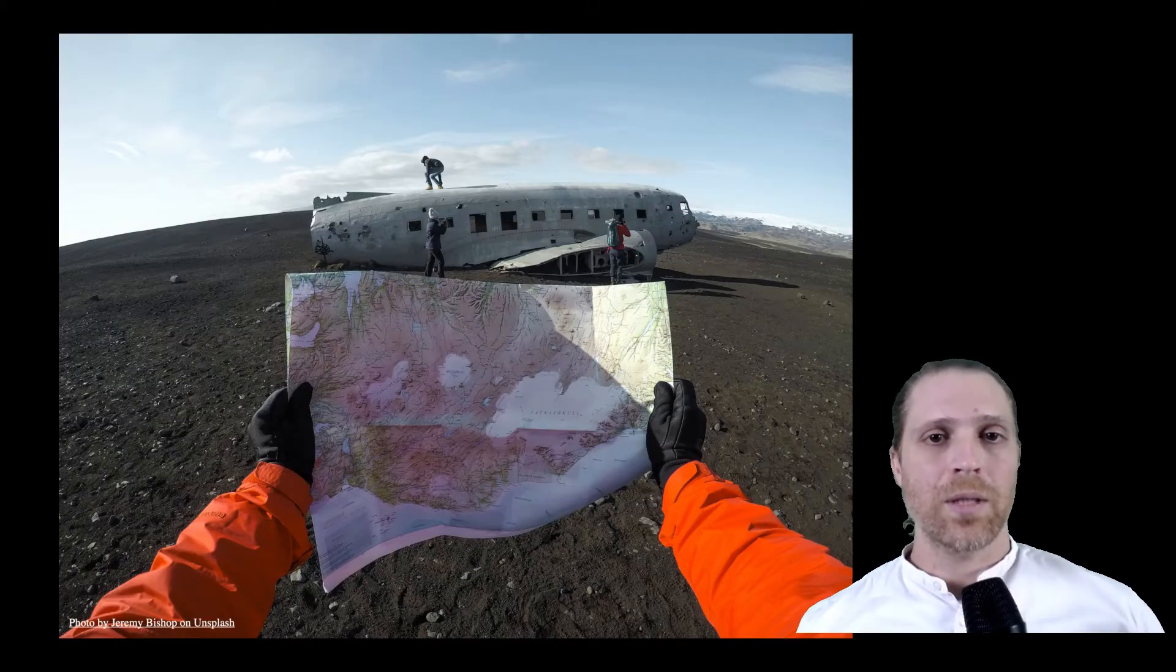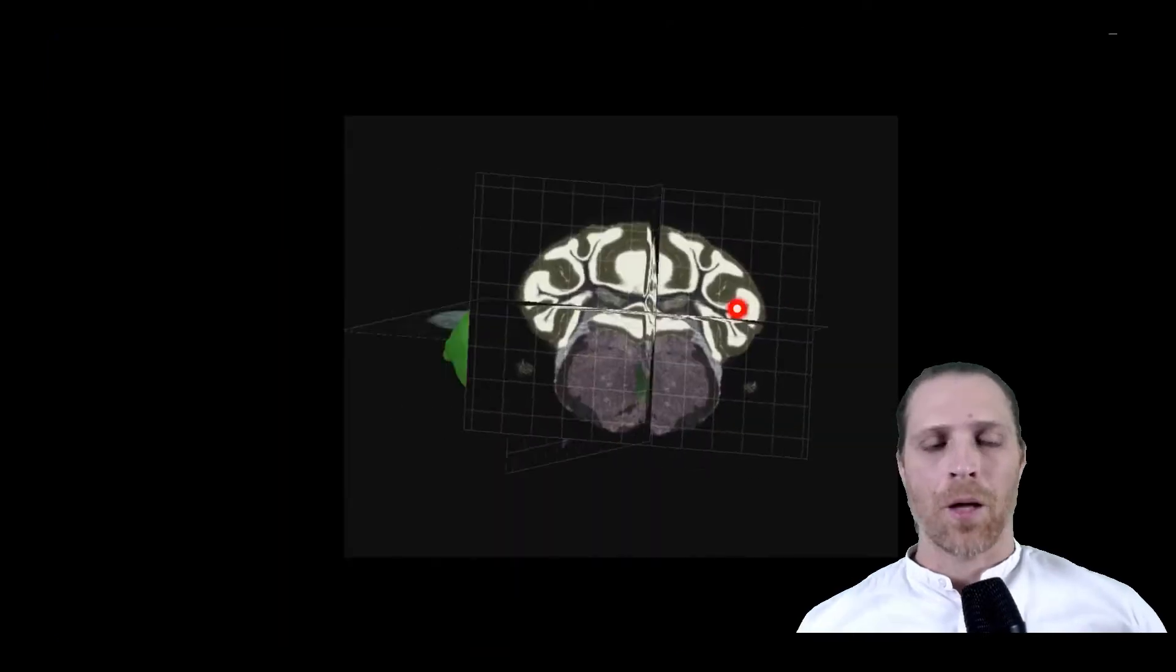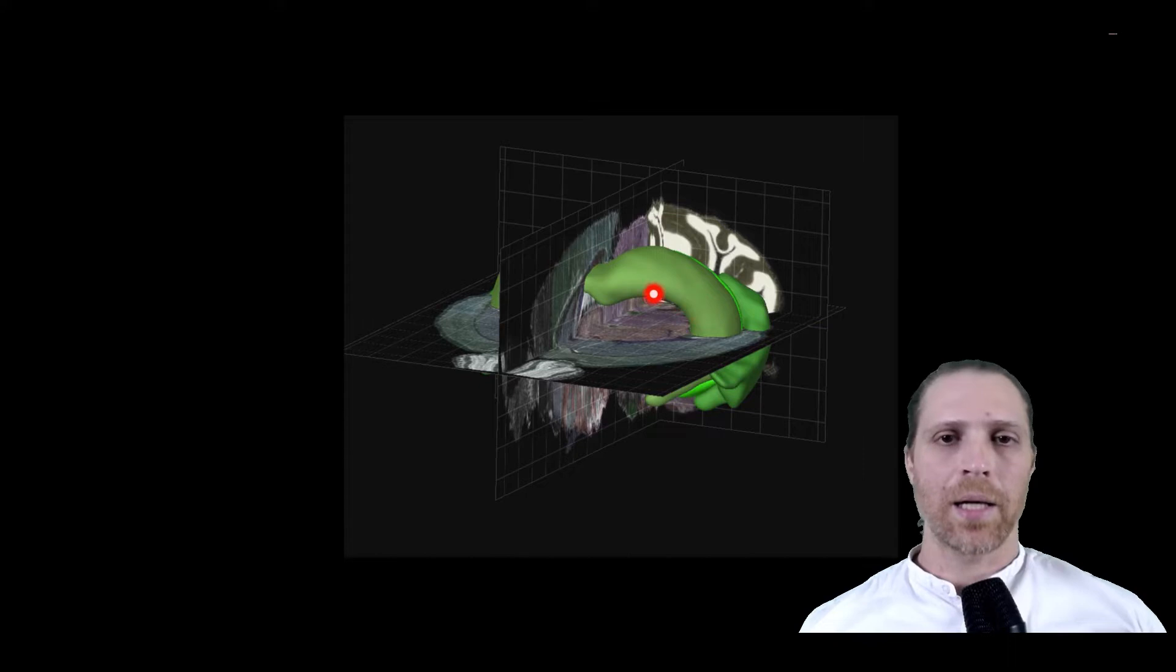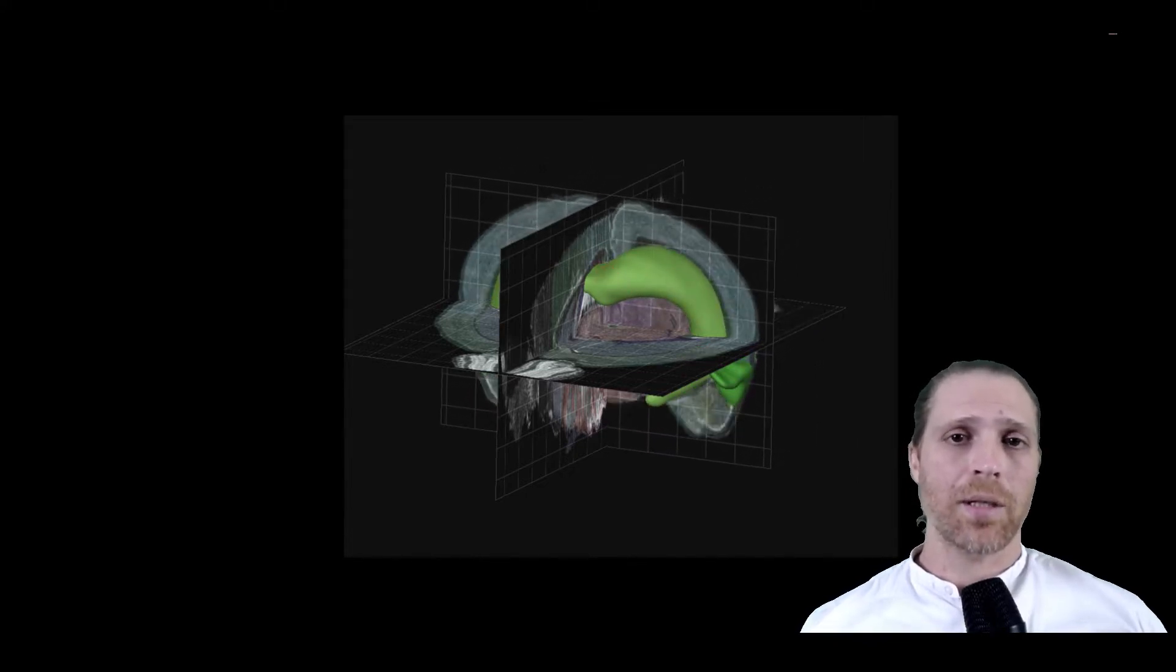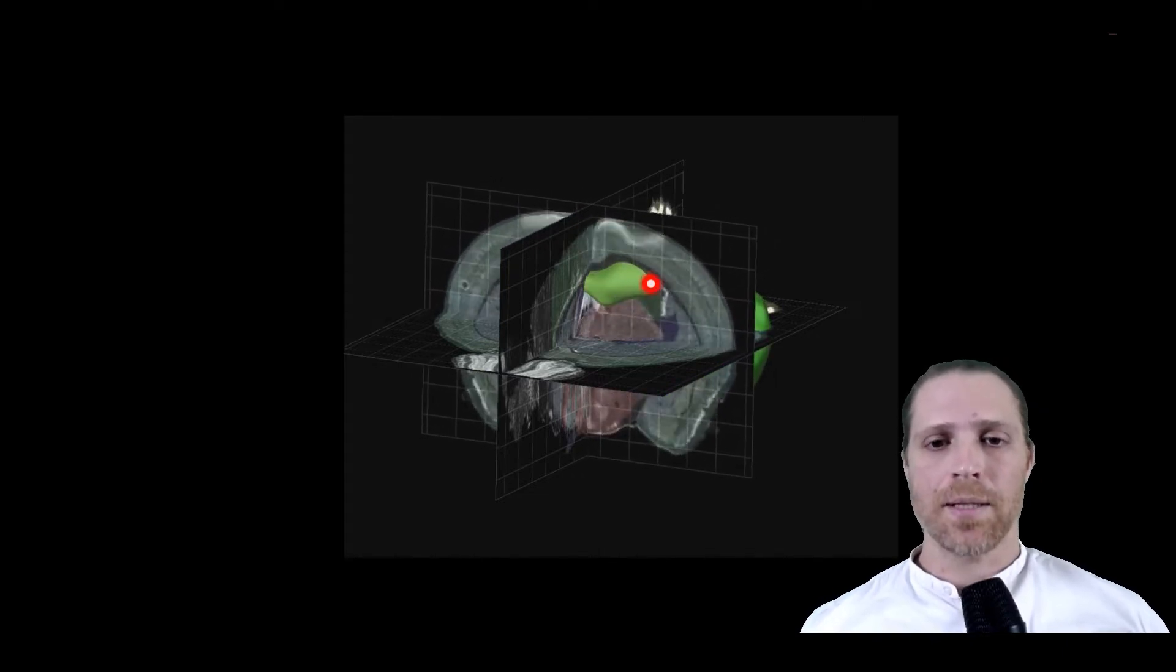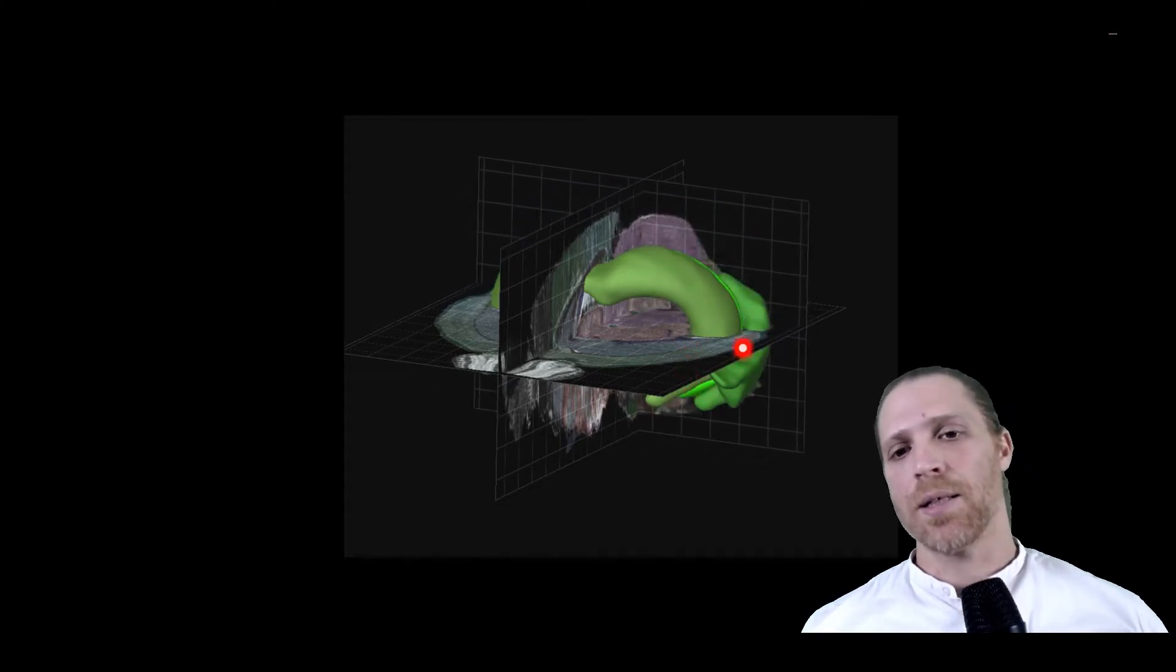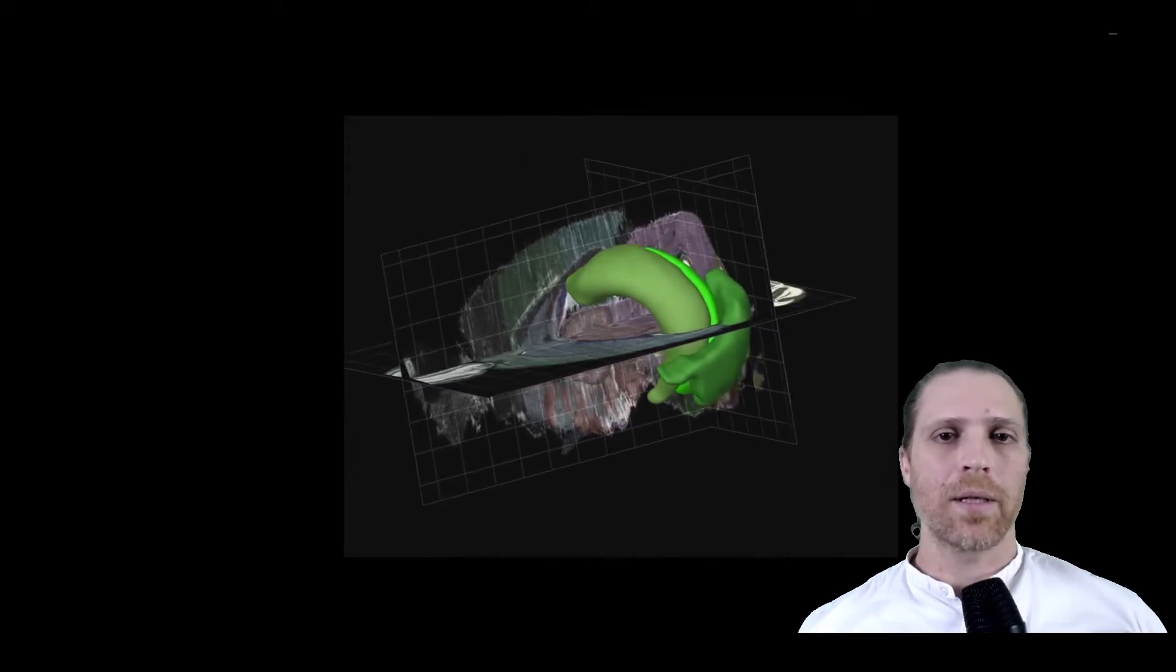To understand this, we need to understand how our brain navigates in space. One of the brain regions that is mostly involved in spatial learning and memory is the hippocampal formation that you can see here in this animation prepared using the Allen Brain Atlas. You can see both the hippocampal formation as well as adjacent cortical regions that are involved in encoding spatial learning and memory.